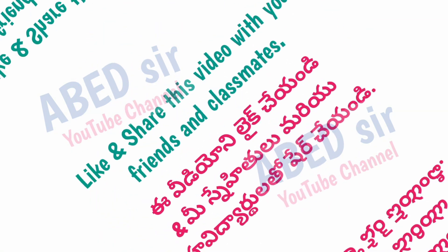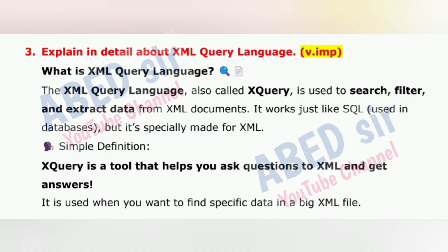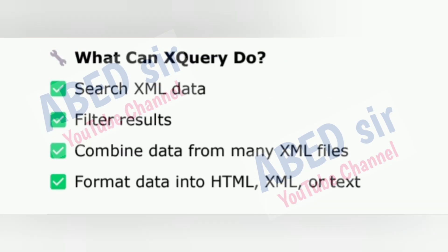Next important long question: Explain in detail about XML query language. The XML query language, also called XQuery, is used to search, filter, and extract data from XML documents. It works just like SQL used in databases, but it's specially made for XML. XQuery is a tool that helps you ask questions to XML and get answers. It is used when you want to find specific data in a big XML file. What can XQuery do? Search XML data, filter results, combine data from many XML files, and format data into HTML, XML, or text.